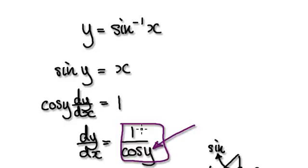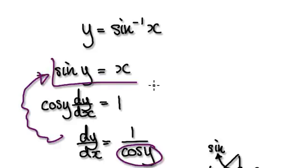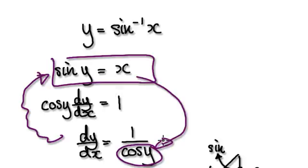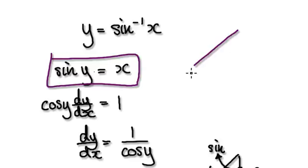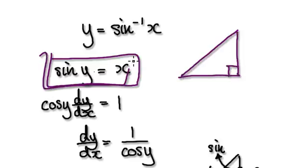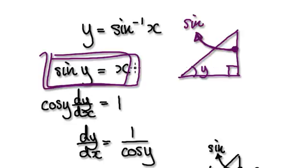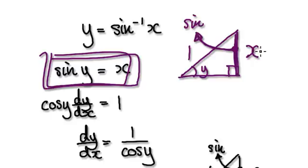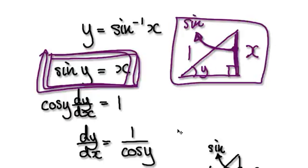The thing is, we don't want the answer in terms of y, so we would need to translate this. To translate this, we would go back to this statement here and then use this to translate. So looking at this, we would create a triangle in such a way that this statement here is true. If sine of y — let's say the angle here is y — then let's say this length here is x, and the hypotenuse here is 1. By setting this as x and 1 here, this statement is true. So now use this to translate cos of y.